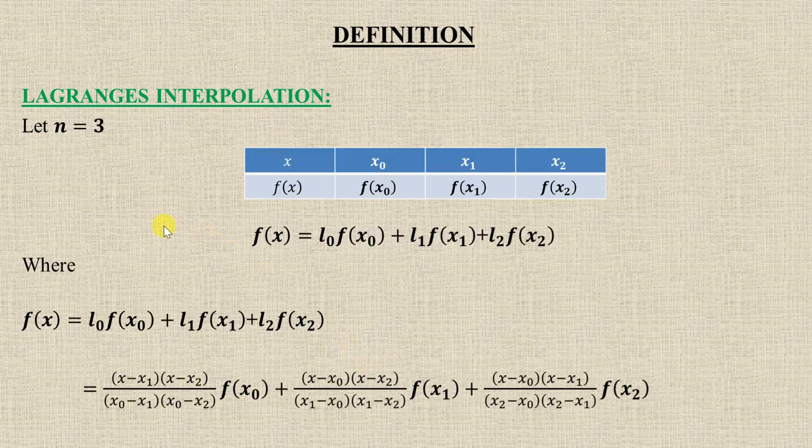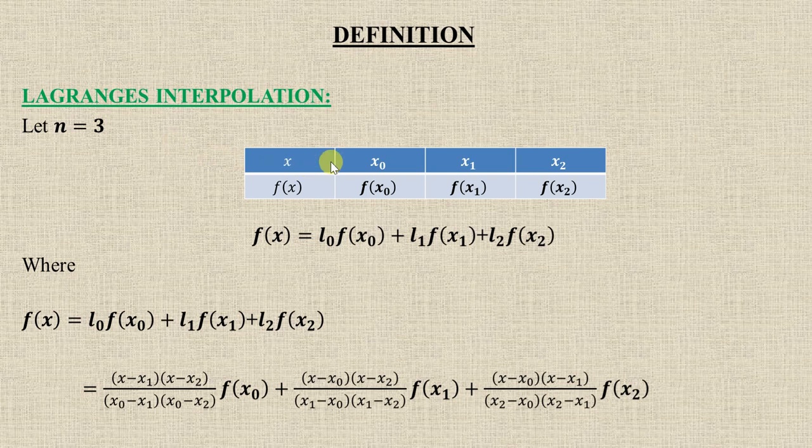Suppose n = 3, so three points are x₀, x₁, x₂ with respective functional values f(x₀), f(x₁), f(x₂). The Lagrange interpolation formula becomes l₀f(x₀) + l₁f(x₁) + l₂f(x₂). For l₀, i is zero, so the x minus x₀ term will not come in the numerator, and in the denominator x is replaced by x₀.